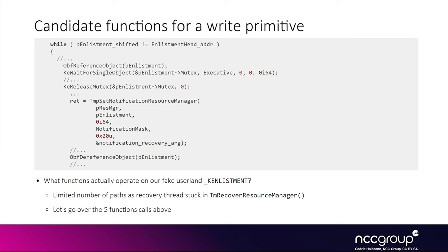We will now move on to trying to understand the logic inside of the vulnerable loop in order to get some sort of write primitive before we can think of ways to escalate privileges.